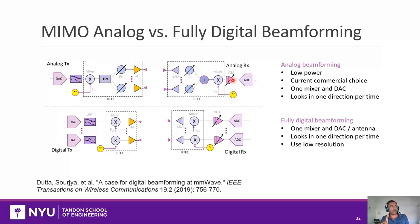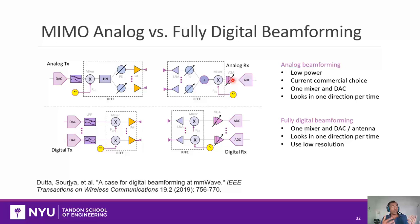Analog beamforming is the design of choice today for millimeter wave systems, but it comes at a price: you can only look in one direction at a time, which is costly if you're a base station serving multiple users. They get around this using hybrid beamforming, combining in multiple directions. Or, if you're a mobile device wanting to support spatial multiplexing or beam search for mobility tracking, there's a performance cost — but a potential benefit in power. That is the conventional wisdom for millimeter wave.